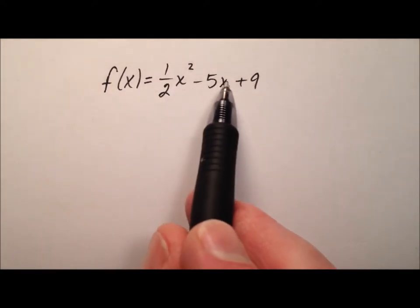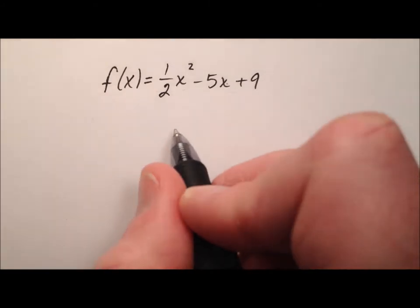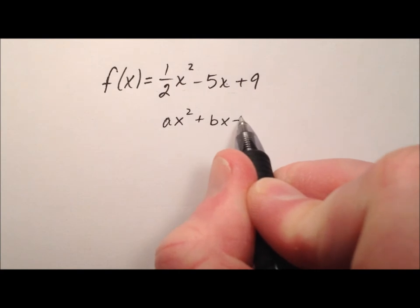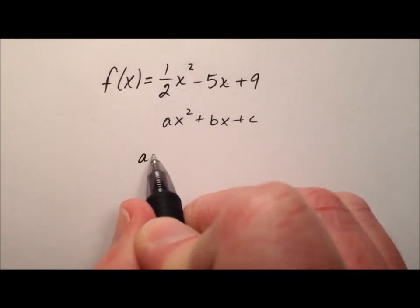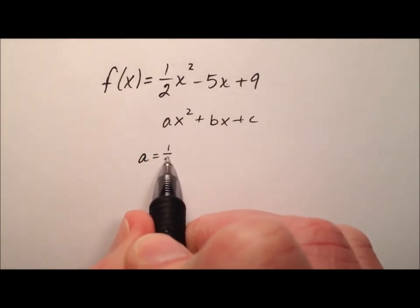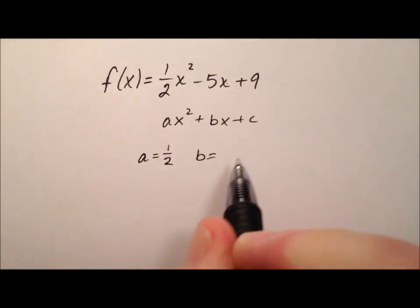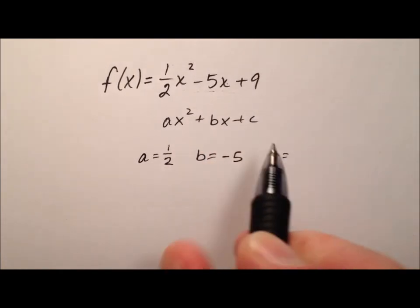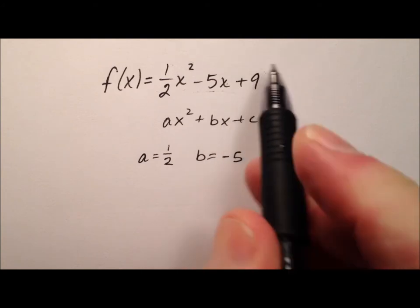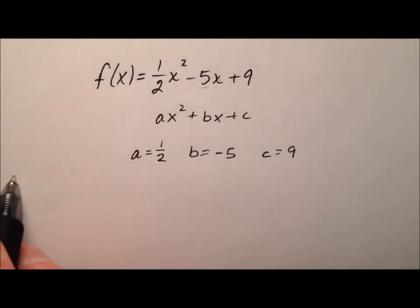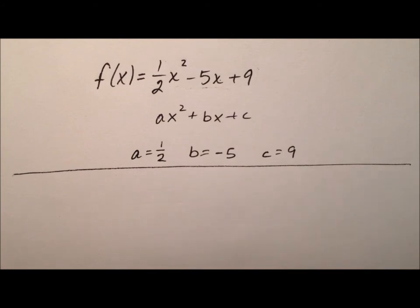This is written in standard form because it's ax² + bx + c. The a value, or the leading coefficient, is going to be ½. The b value, or the coefficient of the linear term, is going to be negative 5. And the c value, or the constant, is going to be 9. We're going to use these values to find some of the characteristics of this function.